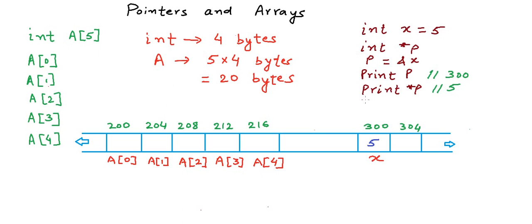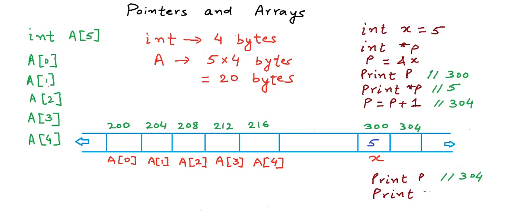We also know that we can increment or decrement a pointer variable by a constant. So we can do something like P = P + 1, which will take us to the address of the next integer. Because an integer is 4 bytes, P would now be 304. If we print P the output is 304, but if we dereference P and print *P we do not know the value at that address. It's like we know Mr. X lives at address 300 but we do not know who is his neighbor at address 304.